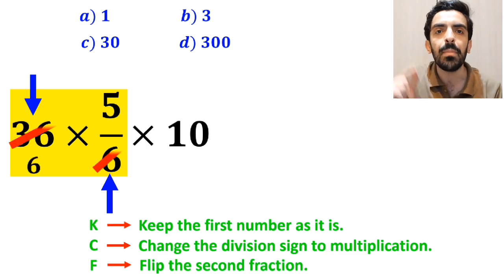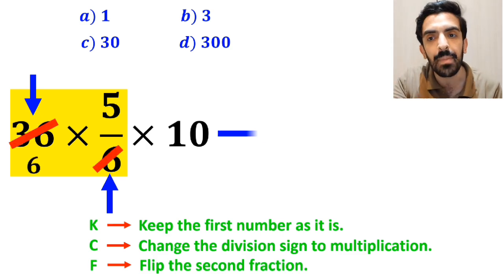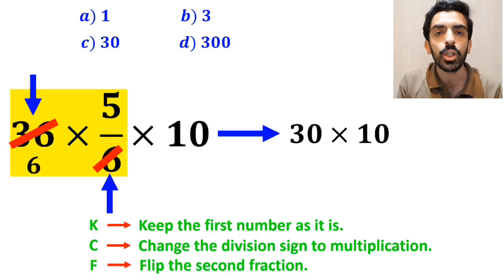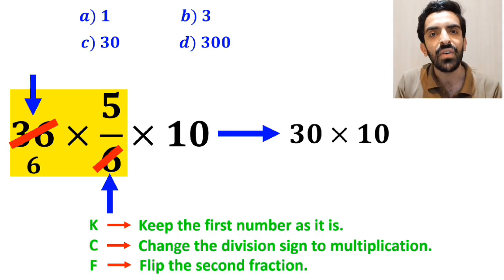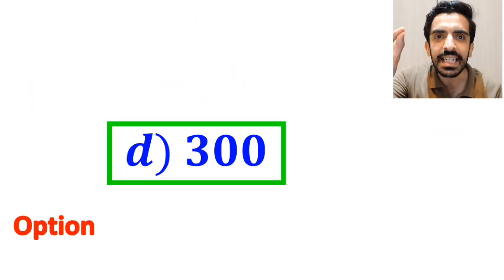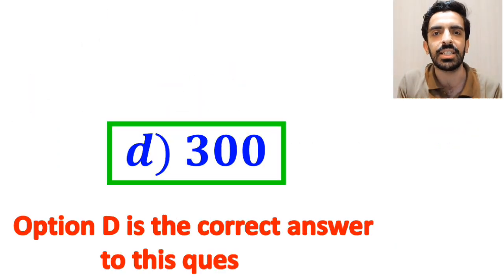Now, we can easily simplify the number 36 with the 6 in the denominator, and instead of this expression, we can write 30 multiplied by 10, which finally gives us the answer 300. Therefore, option D is the correct answer to this question.